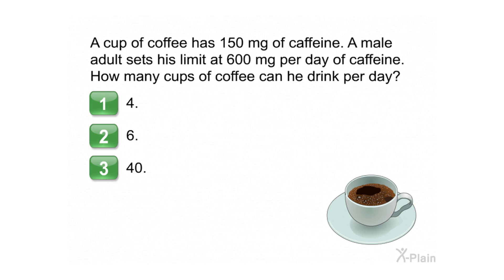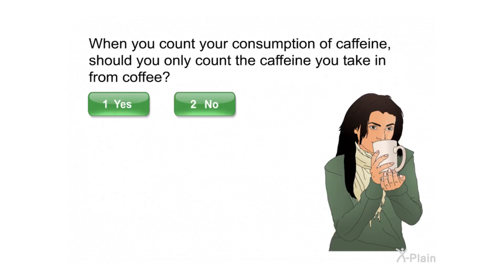A cup of coffee has 150 milligrams of caffeine. A male adult sets his limit at 600 milligrams per day of caffeine. How many cups of coffee can he drink per day? Choose one of the following options: one, four; two, six; three, 40. Correct!